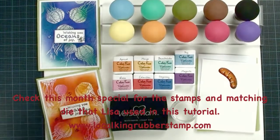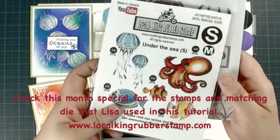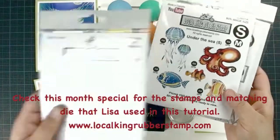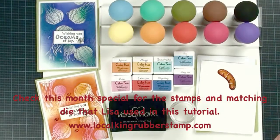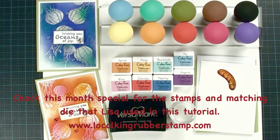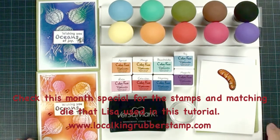We are going to use the under the sea stamp set and matching die set. We'll use the awards background, the magic mushroom and color impact dye-based inks, VersaMark clear embossing powder, and watercolor cardstock. I found the watercolor cardstock blends better.